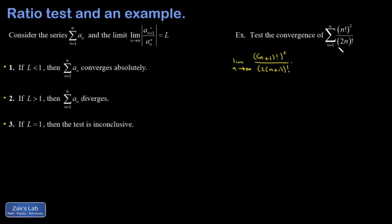I'm going to divide by this expression, which is the same as multiplying by its reciprocal. So I get 2n! over (n!)².